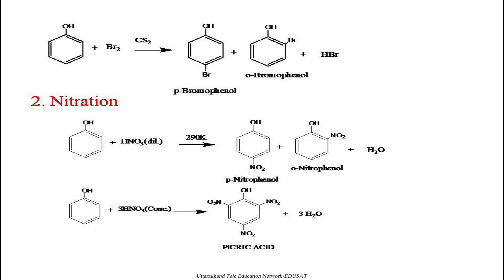Next reaction is nitration. The nitration of phenol is carried out in the presence of dilute nitric acid at 290 K, giving para-nitrophenol and ortho-nitrophenol as two different products. But if the reaction is carried out with concentrated nitric acid, we obtain 2,4,6-trinitrophenol, known as picric acid. One important thing about picric acid is that it is the only organic acid which does not contain any carboxyl (COOH) group, yet is still called an acid.